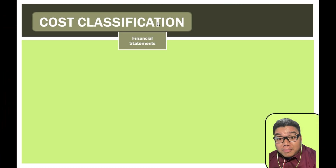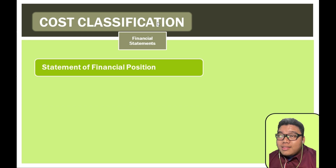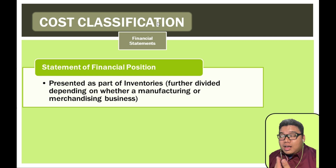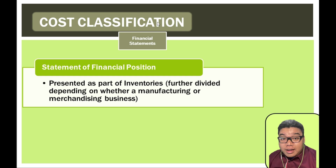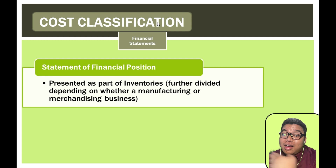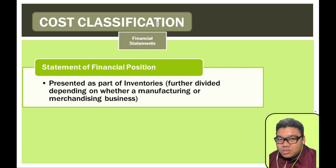Now we go to financial statements classification. For the statement of financial position, we have inventories. Inventories are manufacturing costs that form part of the balance sheet because they are only recognized as an expense when the unit of inventory exits the company — when sold, lost, or stolen.